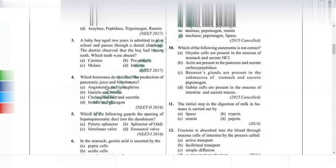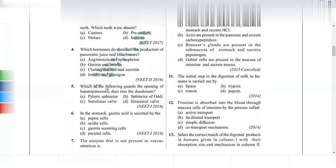Which hormones stimulate the production of pancreatic juice and bicarbonate? Bicarbonate is released to act as a buffer for the acidic chyme coming from the stomach. The correct answer is option C: cholecystokinin and secretin. These same two hormones also act on the liver to stimulate bile release, as well as on the pancreas.